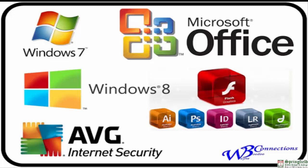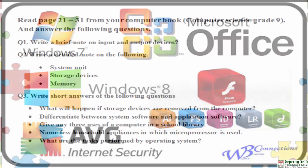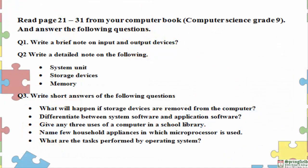This completes your first chapter. The assignment requires you to read pages 21 to 31 and complete question answers, multiple choice questions, and activities. Write a brief note on input and output devices. Write a detailed note on the system unit, storage devices, and memory.